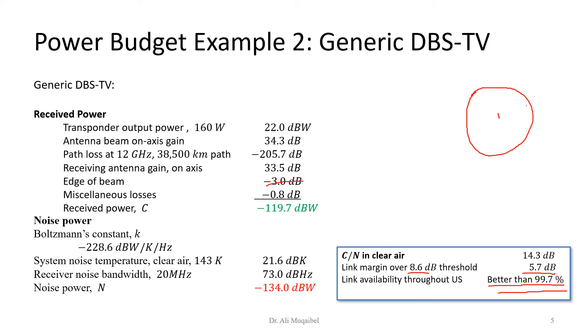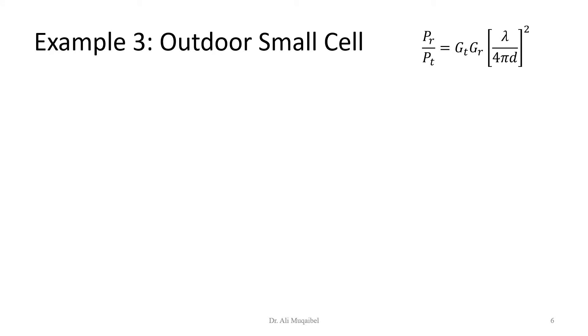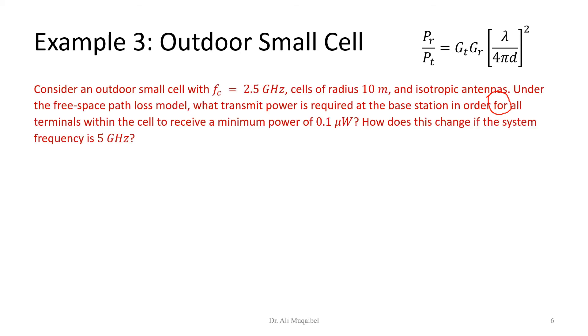For the third example, we assume that we have a wireless kind of mobile system with a small cell. We're making very simple assumptions to start with, and then we will complicate things as we go on the course. For an outdoor small cell, we're given the following parameters: consider an outdoor small cell with the frequency of 2.5 GHz, cell of radius 10 meters, and isotropic antennas. Under the free space path loss model, this is an assumption—it's not usually the case for mobile systems, but we're just making things simple. We'll make free space model, which means we can use the same equation we had before. Later on, we'll add to these equations and we'll change the exponent here.